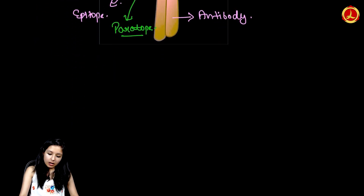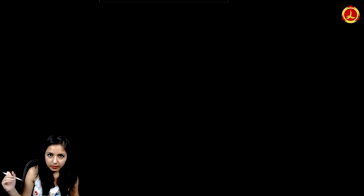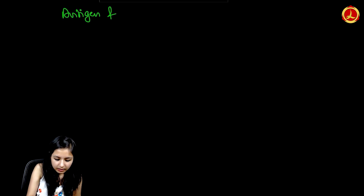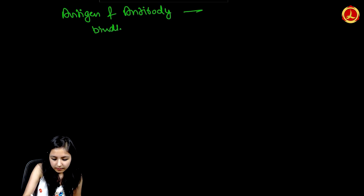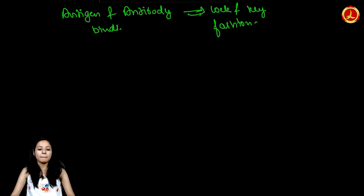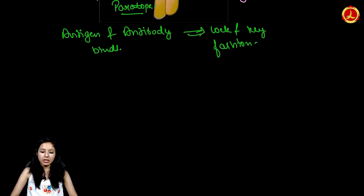Now, in what manner do antigen and antibody bind? There is a particular shape of an antibody and a particular shape on the antigen which both fit together. So antigen and antibody bind in a lock and key fashion. This was all about the structure of antibody. In the next video, we will be talking about the functions of antibody and the different types of antibodies and their specific functions. Thank you.